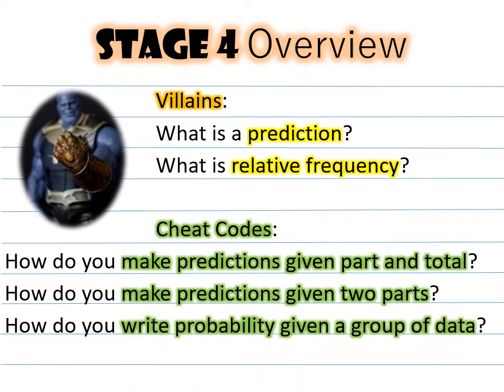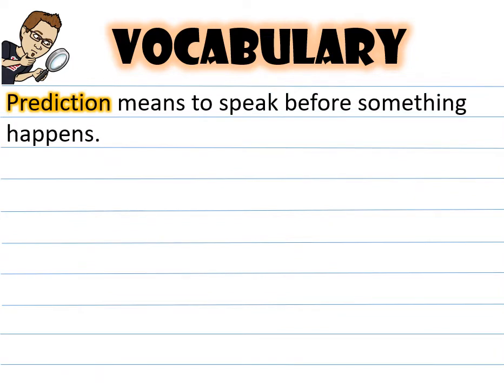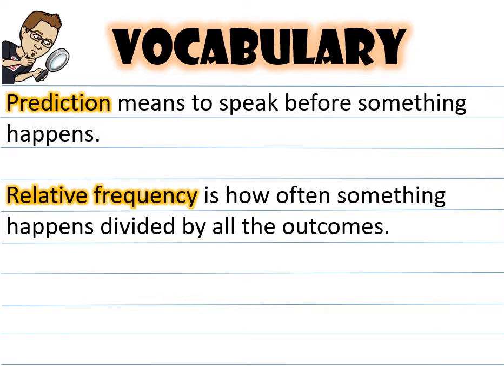Let's take a look at the vocabulary. Our first word is 'prediction' — prediction means to speak before something happens. This happens a lot in sports where people try to predict who is going to win a game. 'Relative frequency' is our second vocabulary word — this is how often something happens divided by all of the outcomes.